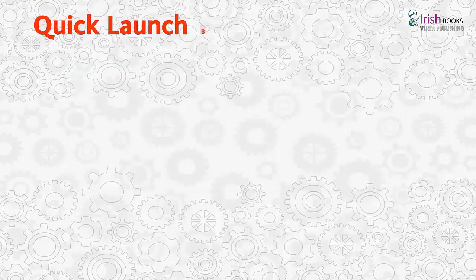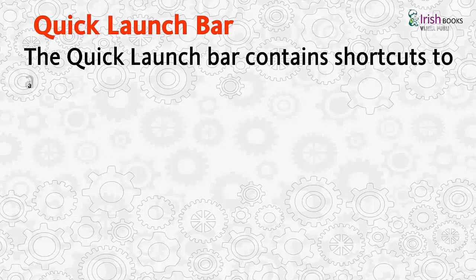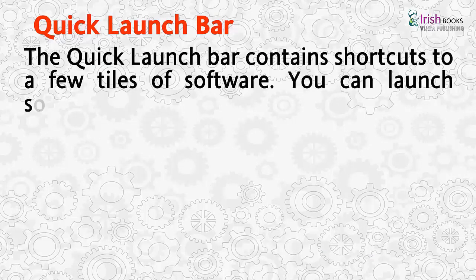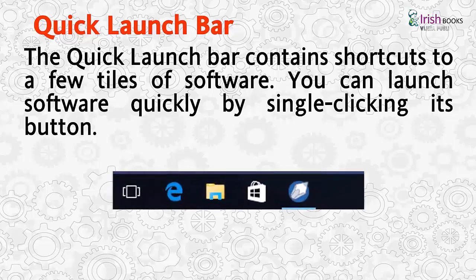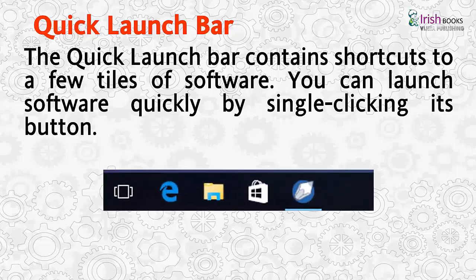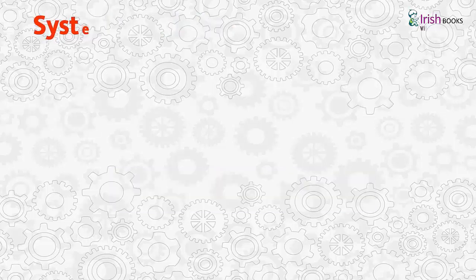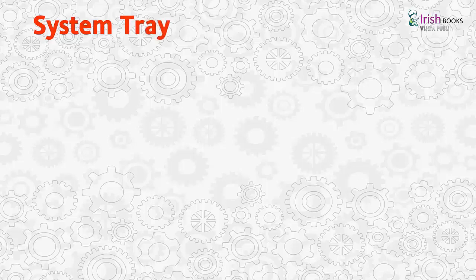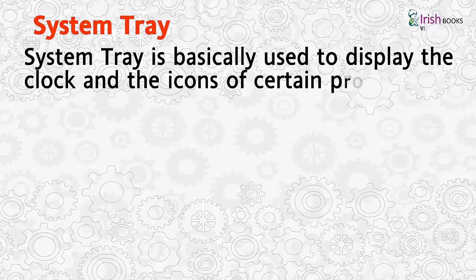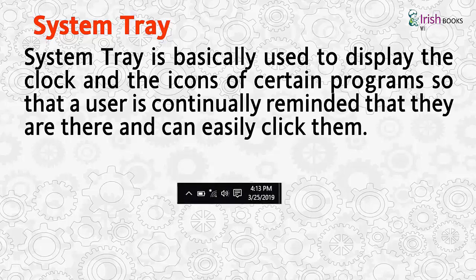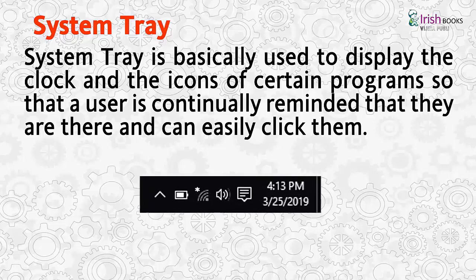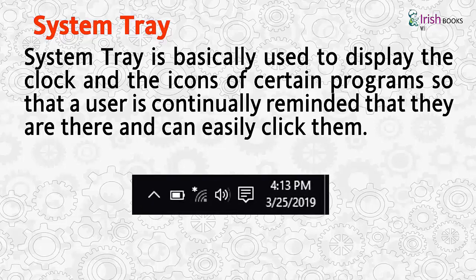Quick Launch Bar: The Quick Launch Bar contains shortcuts to a few tiles of software. You can launch software quickly by single-clicking its button. System Tray: The System Tray is basically used to display the clock and the icons of certain programs so that a user is continually reminded that they are there and can easily click them.